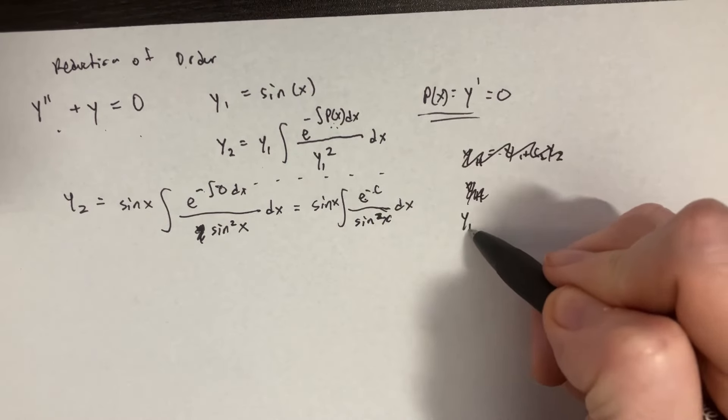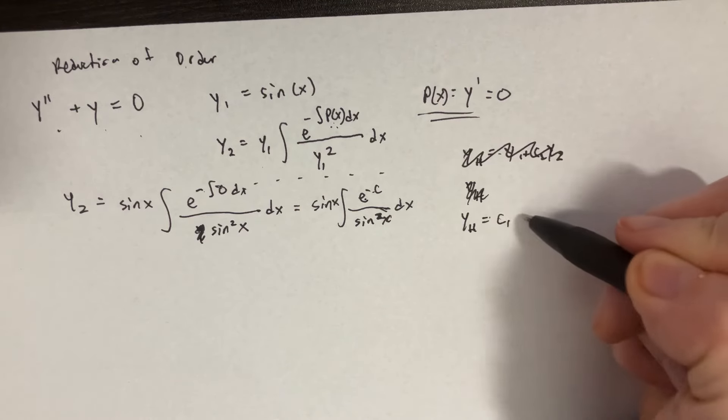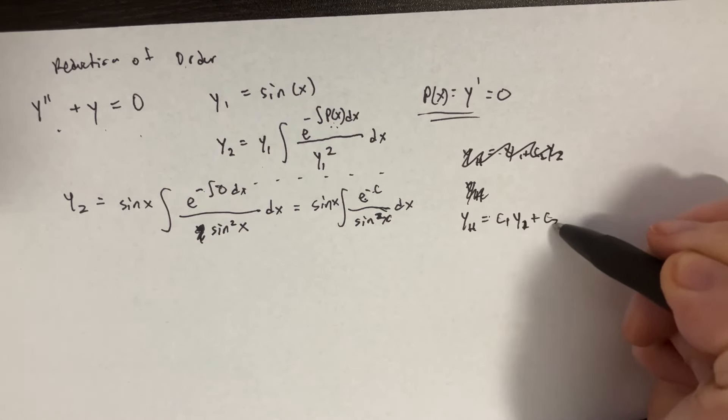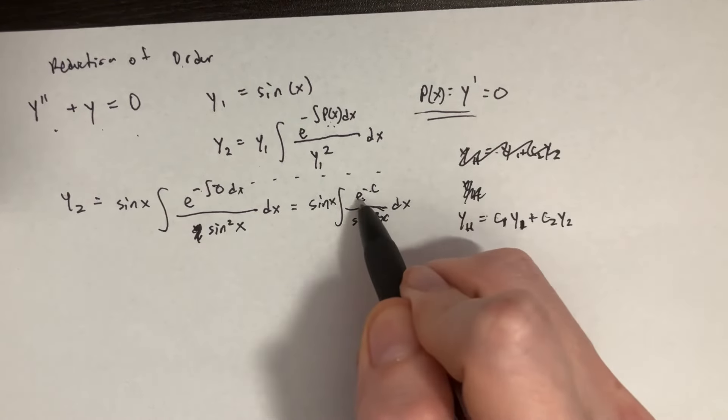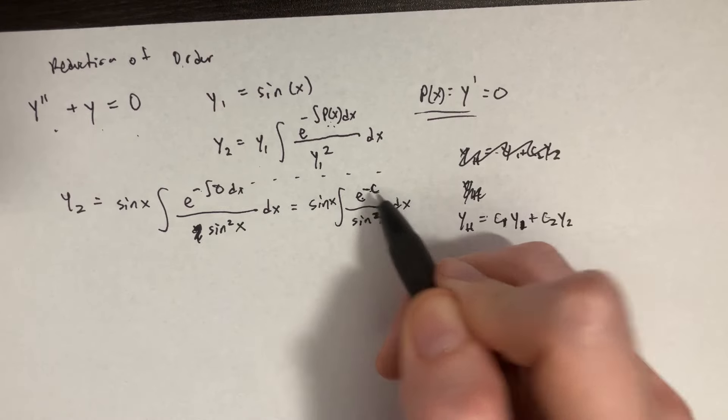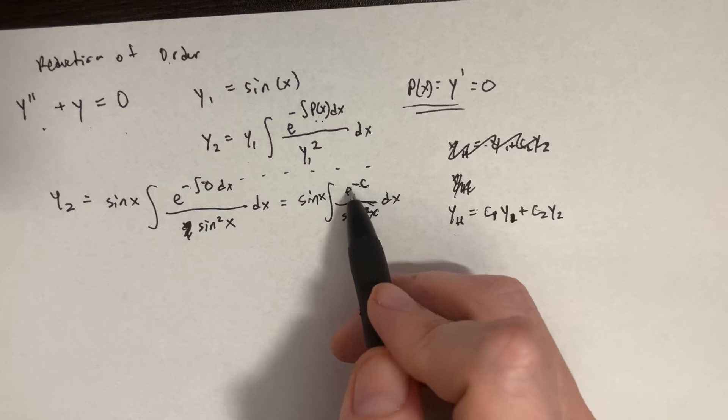Keep in mind that usually when we have these homogeneous equations, these answers, we could say c1 y2 or c1 y1 plus c2 y2. We could put constants in front of our answers. So if we have a constant here, e to the c is just basically c again. If we have that constant, we can actually pull that out and absorb it into this constant.